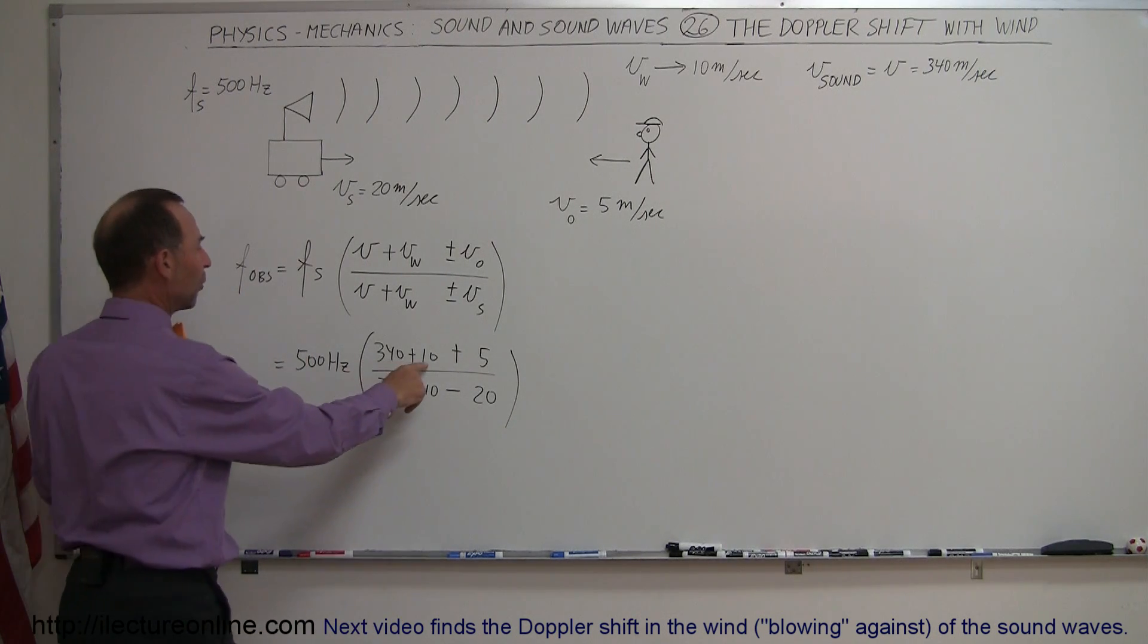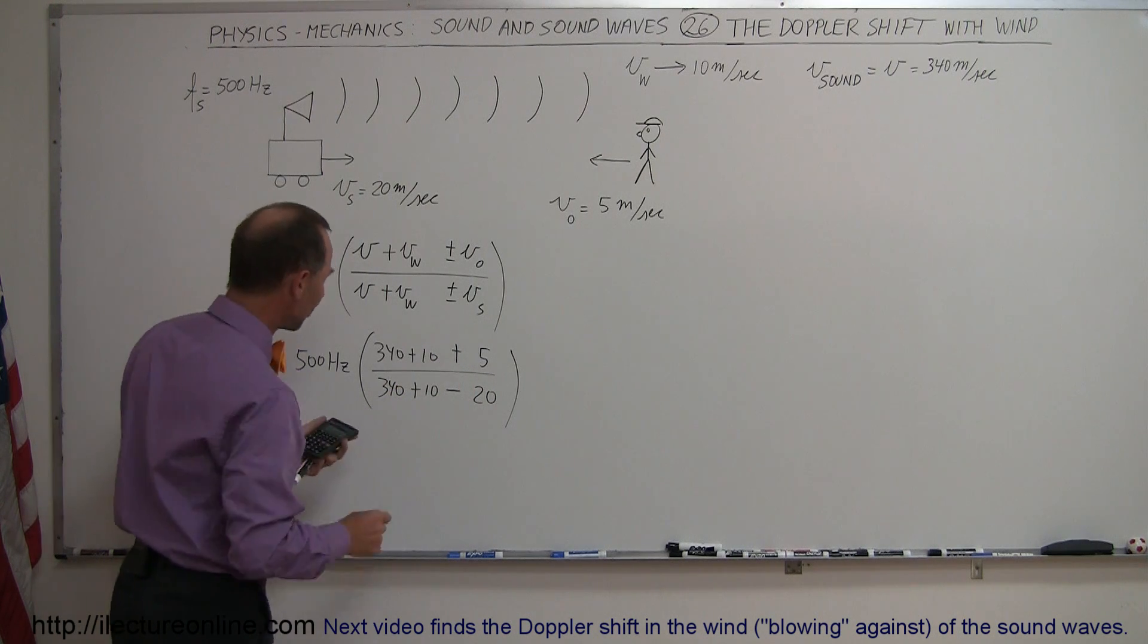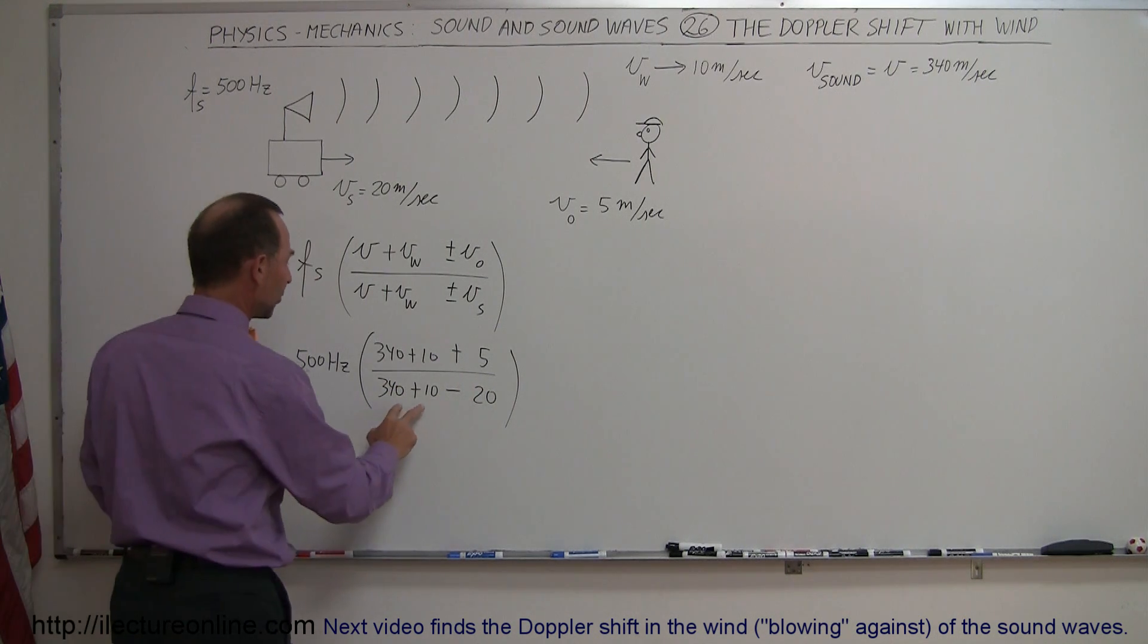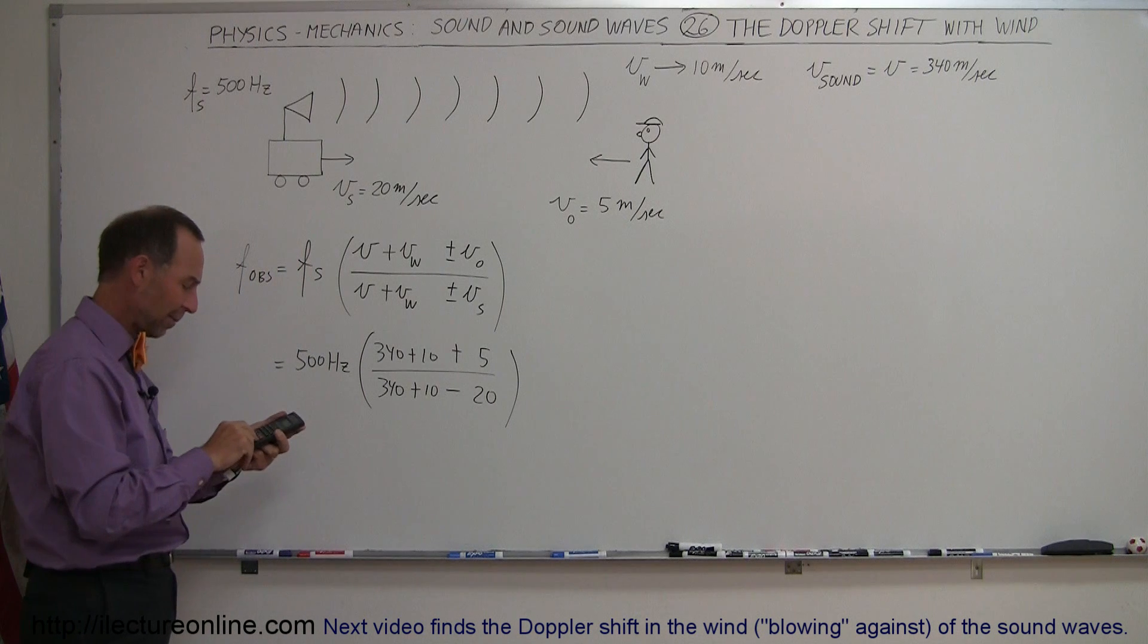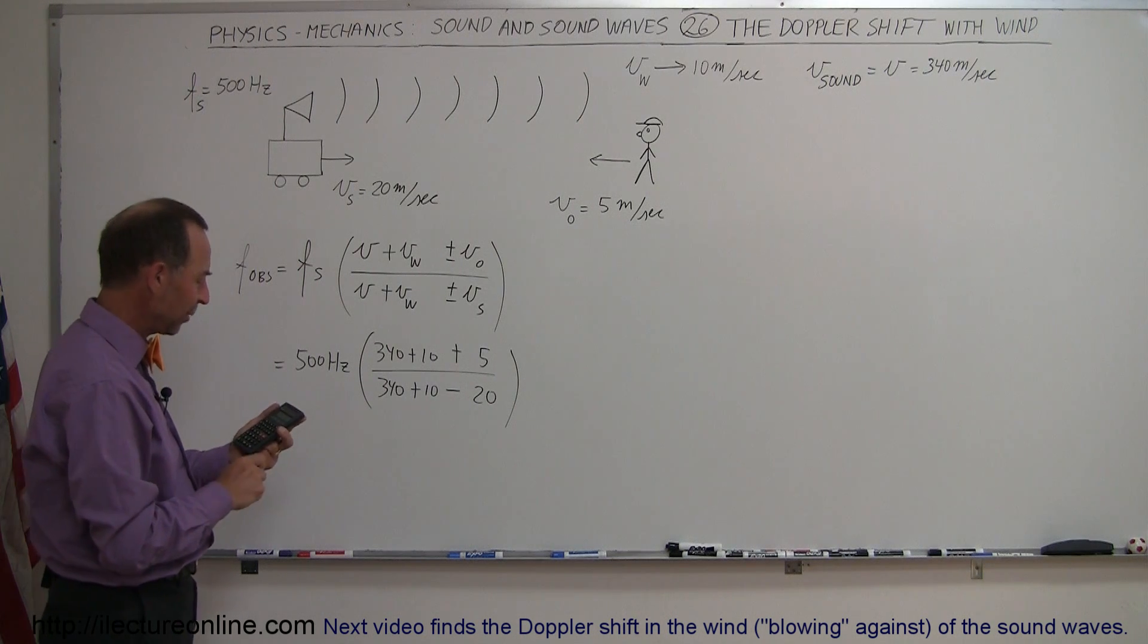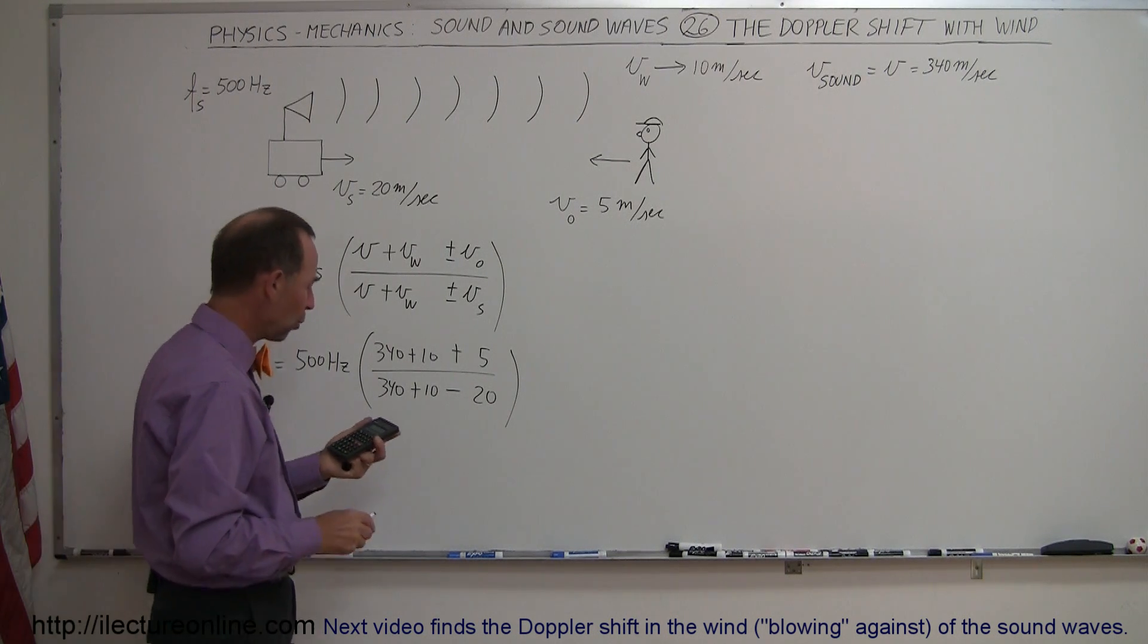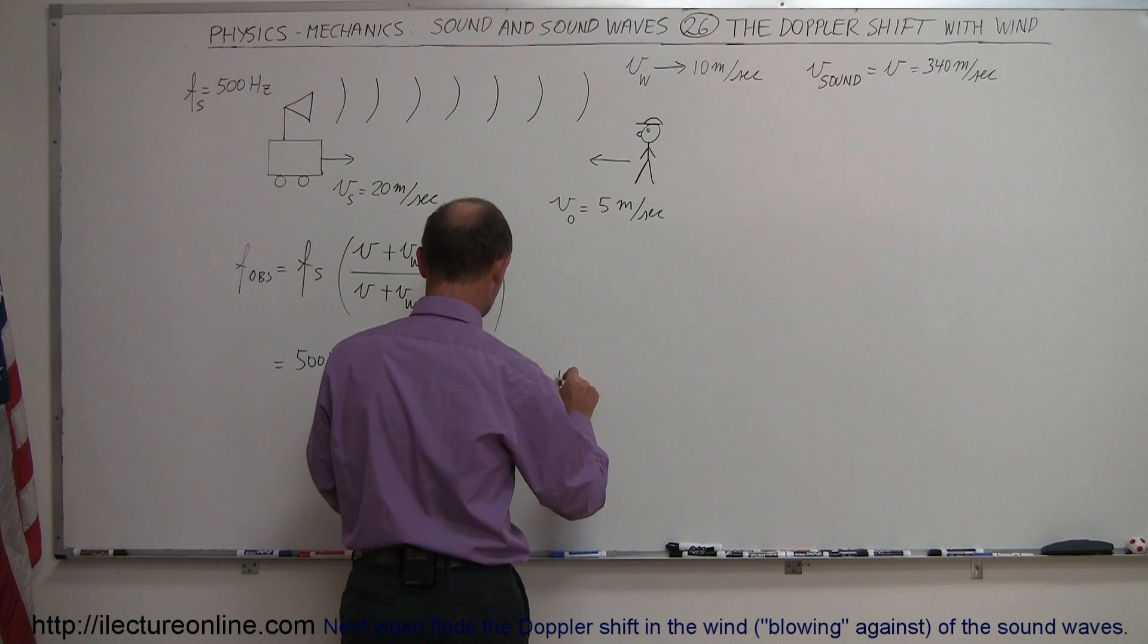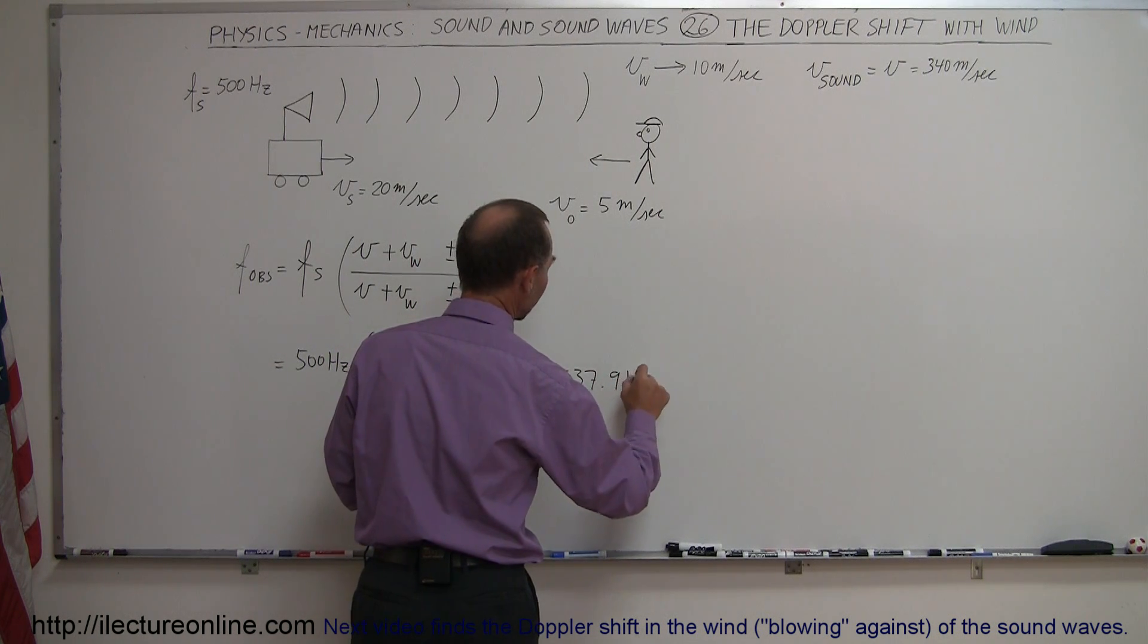So, this is 340 plus 10 plus 5, that would be 355, divided by 350 minus 20, that's divided by 330, and multiply it times 500. So, that would be a frequency of 537.9 hertz.